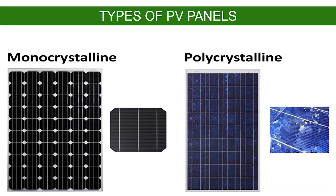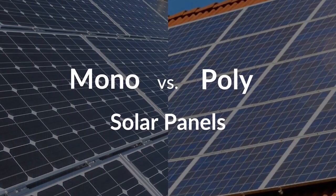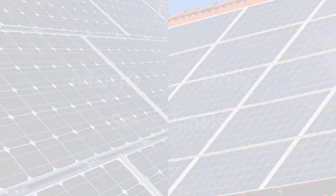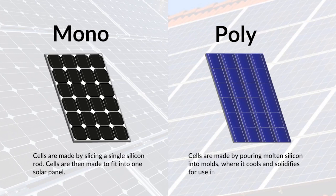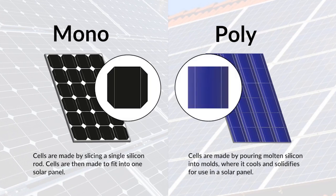There are several differences between poly panels and mono panels. Mono solar panels are made from a single silicon crystal, while poly panels are made from melting down crystals into cells. This creates a visual difference — mono panels are typically darker than poly panels, but a coating can be added to poly panels to give them a similar appearance.